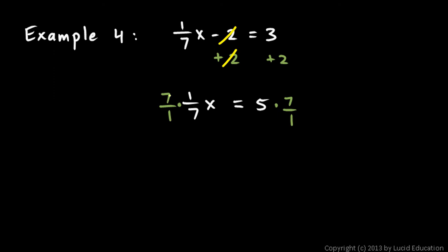And you know that 7 over 1 times 1 over 7, that will just equal 1. This whole thing is equal to 1. Remember, any number multiplied by its reciprocal is 1. So this leaves me with x on the left, and on the right I have 5 times 7, which is 35.